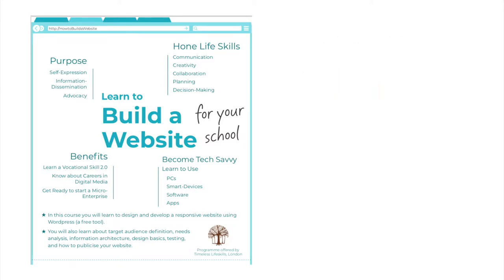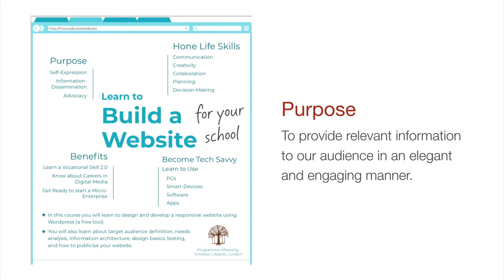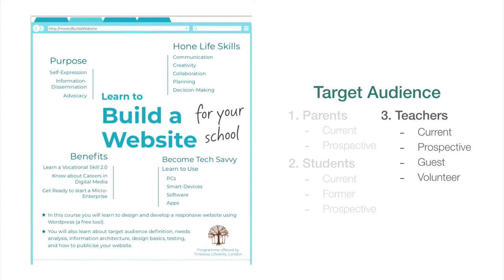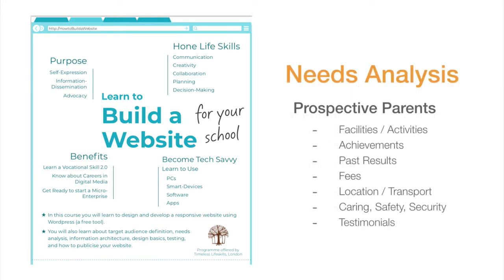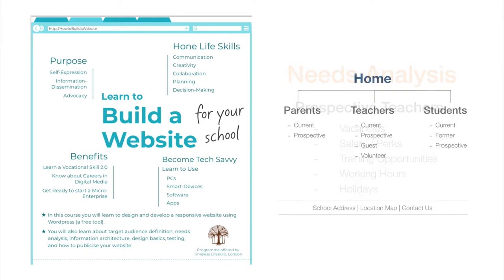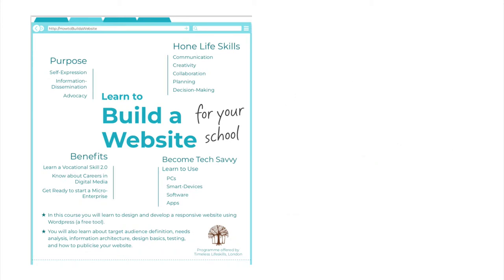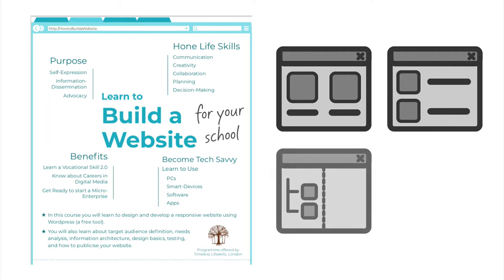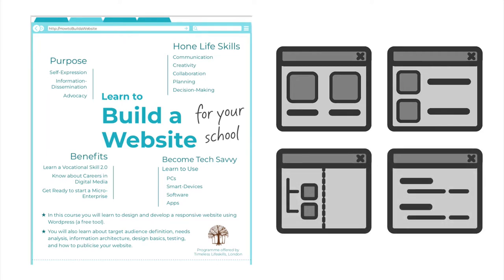We will kick off the website design project by discussing what purpose or objective our school website wishes to achieve. Based on this, we will define a target audience for our website and do a needs analysis — what are the information needs of various segments of our target audience? We will then create a site map, or what is called the information architecture of our website. The next step will be to create a storyboard for our website, for which we will use PowerPoint so that students also learn how to use this tool. Here we will write the text, or what is called the copy, of our website and find or create the right visual elements like photos and videos that will be used in each section.